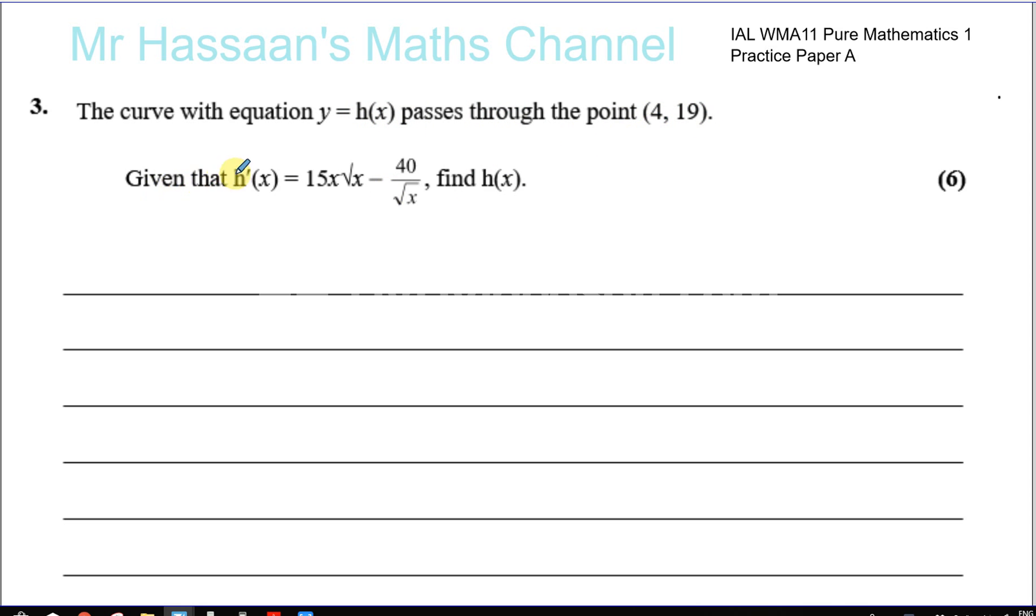Given that h'(x) equals 15x times root x minus 40 over root x, find h(x). So basically they've given us the gradient function and they want us to use that to find the original function.